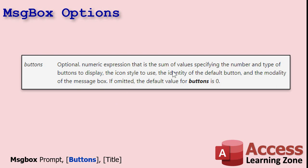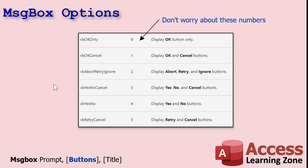Moving on to the buttons — there's a set of button constants you're going to use to specify what buttons you want: VBOKOnly is just an OK button; VBOKCancel gives OK and Cancel; VBAbortRetryIgnore goes back to the old DOS days; VBYesNoCancel is my favorite — yes, no, and cancel — especially to prompt users before something dangerous like deleting records, because it lets them say 'I don't know, just cancel.' Then there's VBYesNo and VBRetryCancel. You don't have to memorize the numeric values because IntelliSense will give you a big long list of all options when you type a comma after the prompt.